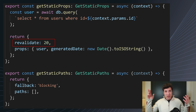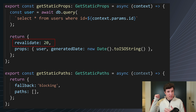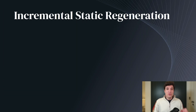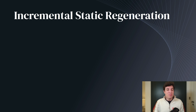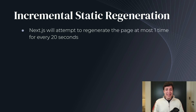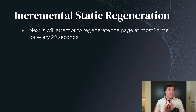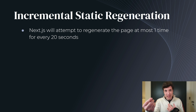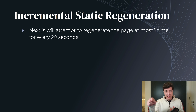You can see that revalidate 20 is asking Next.js to keep that data fresh for the next 20 seconds. If a user goes there after 20 seconds, Next.js needs to revalidate the page but still sends old data to that user. Next.js in that specific example will attempt to regenerate that page at most one time every 20 seconds. Even if 1000 users go to that page, Next.js regenerates that page one time, and then for all the other users they just receive something that Next.js saved to disk.